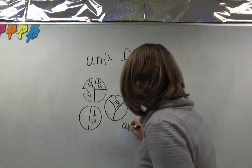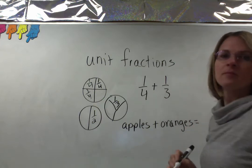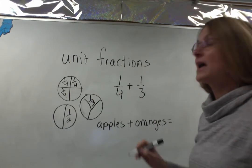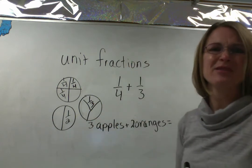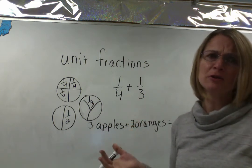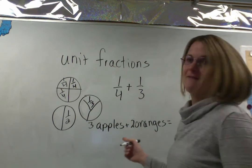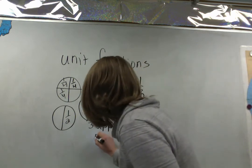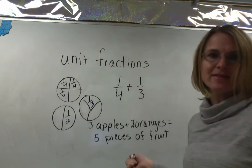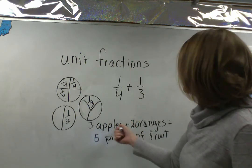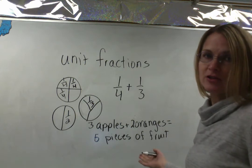Think about it this way: if I had apples and I had oranges — let's say I had two oranges and three apples and I wanted to add them together. Well, I don't have five apple-oranges because an apple-orange isn't a thing. I'm not going to get five apples or five oranges, but what I am going to get is five pieces of fruit.